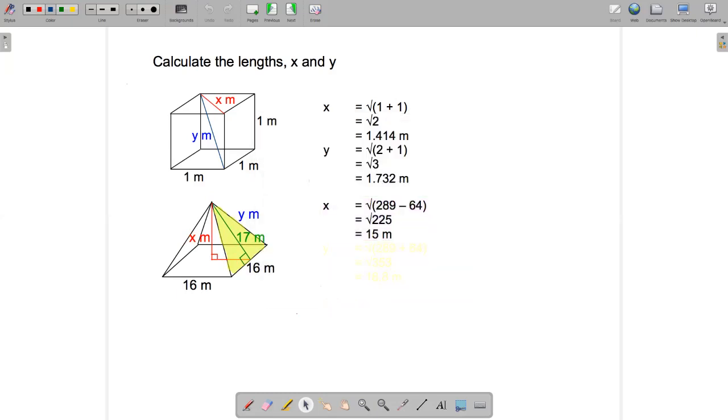Does that seem reasonable looking at our picture? Yeah, it seems reasonable. If it's 17 meters from here up to here, if we went to the middle instead and went straight up, that would be a shorter distance. 15 meters seems reasonable.